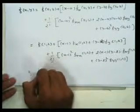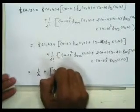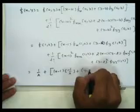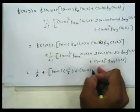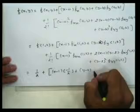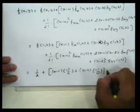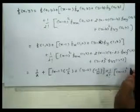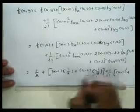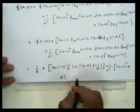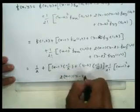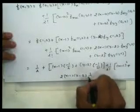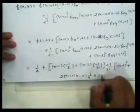The Taylor series expansion gives f(x,y) = 1/(xy) as: 1/2 + (x−1)·fx(1,2) where fx(1,2) = −1/2, plus (y−2)·fy(1,2) where fy(1,2) = −1/4, plus (1/2!)·(x−1)²·fxx, plus the cross term 2(x−1)(y−2)·fxy(1,2) = 1/4, plus (y−2)²·fyy(1,2).